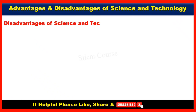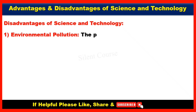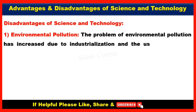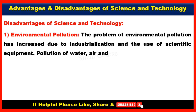Disadvantages of Science and Technology. First, Environmental Pollution. The problem of environmental pollution has increased due to industrialization and the use of scientific equipment. Pollution of water, air, and soil has put life in danger.